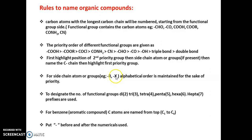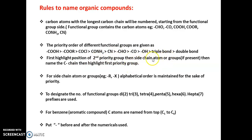The halogen atoms or alkyl groups act as side chain groups or atoms. First highlight the position of the second priority group, then highlight the side chain atom or side chain group if present, then highlight the carbon chain length, then highlight the first priority group. So the order is: position of second priority group → side chain atom/group → main carbon chain → position of the first priority group.